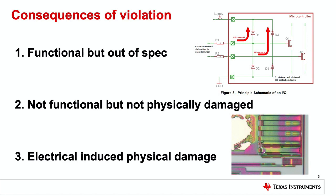While the spec itself is not pretty complex, I want to jump over to the three main consequences of violating the absolute maximum ratings. The first one is that the ports are still functional but operated out of specification. So what is a typical scenario for this?